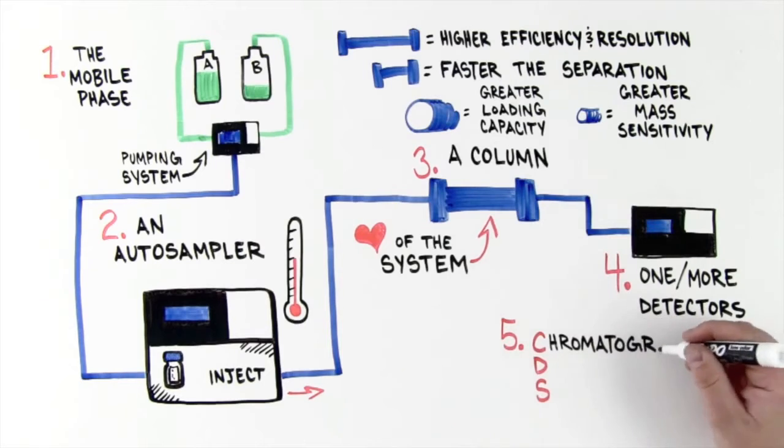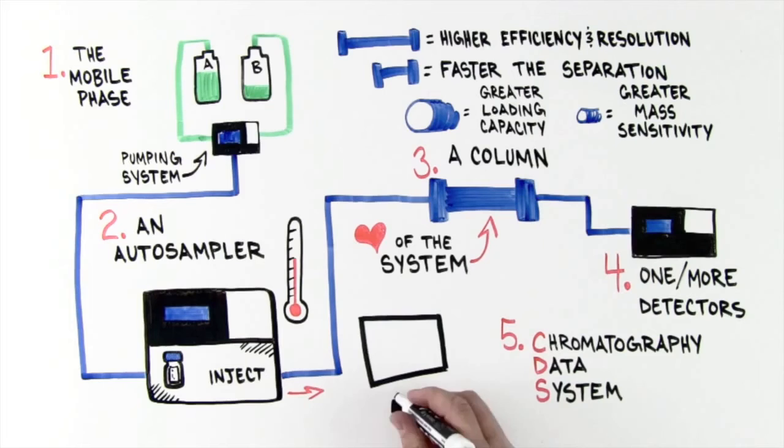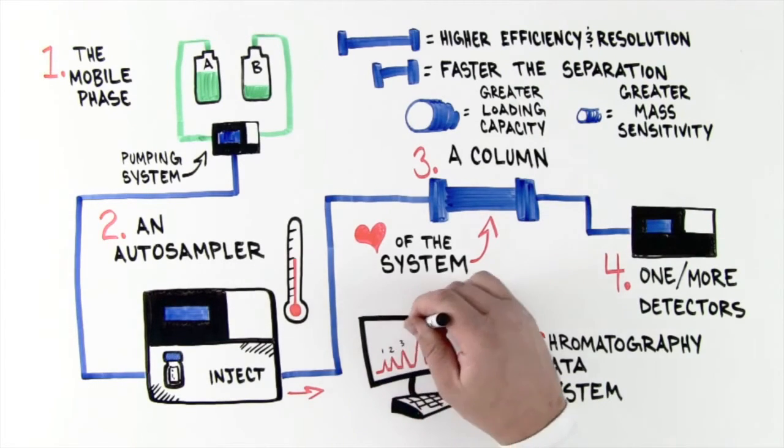And 5. A chromatography data system, CDS. The data system translates the signal from the detector into a chromatographic spectrum that provides qualitative and quantitative data about the sample.